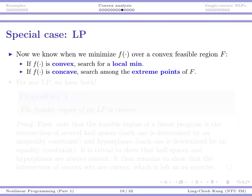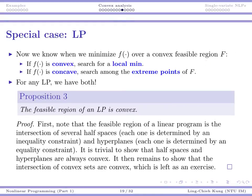To give more intuition about the two propositions, let's use the special case of linear programming. We know when minimizing f over a convex feasible region F: if f is convex, we only need to search for a local minimum; if f is concave, we only need to search among extreme points. These are the two conditions, and not surprisingly, a linear program satisfies both.